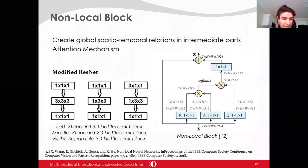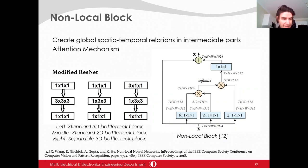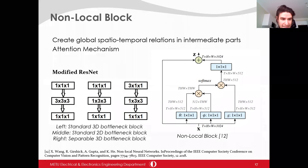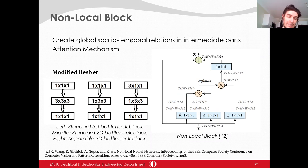Another important aspect related to the non-local paper is the architecture, which is referred to as modified ResNet in this study. In the figure, on the left is a standard 3D bottleneck block, in the middle is a standard 2D bottleneck block, and on the right is a version of separable 3D bottleneck block. In the modified ResNet, the middle and right bottleneck blocks are implemented in an alternating way, and the non-local block is also added in an alternating way.